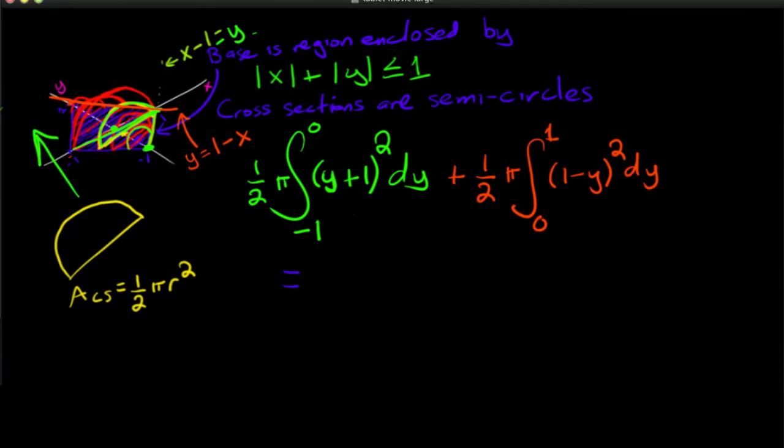And if you, I mean, another shortcut too is you'll notice it's symmetric. So you only really have to do one of these and then you can multiply it by 2.